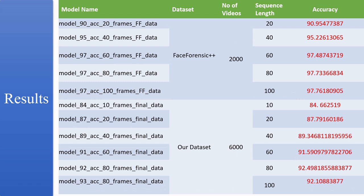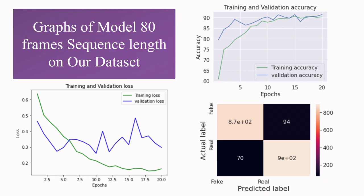These are the results achieved after training the final model. The accuracy of the model increases as the sequence length increases, but at a certain level the accuracy flattens. For example, in the FaceForensics++ dataset, after training on 40 frames the accuracy remains almost constant. In our own dataset, accuracy continues increasing with sequence length. The training and validation loss decreases with increasing epochs, and training and validation accuracy increases with increasing epochs. This is the confusion matrix for one of our models.